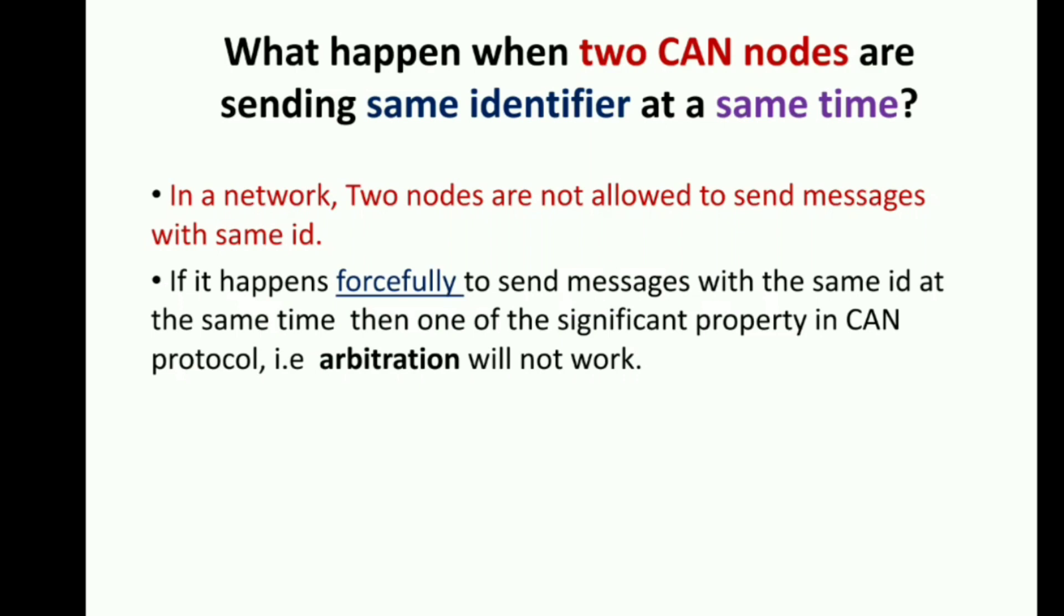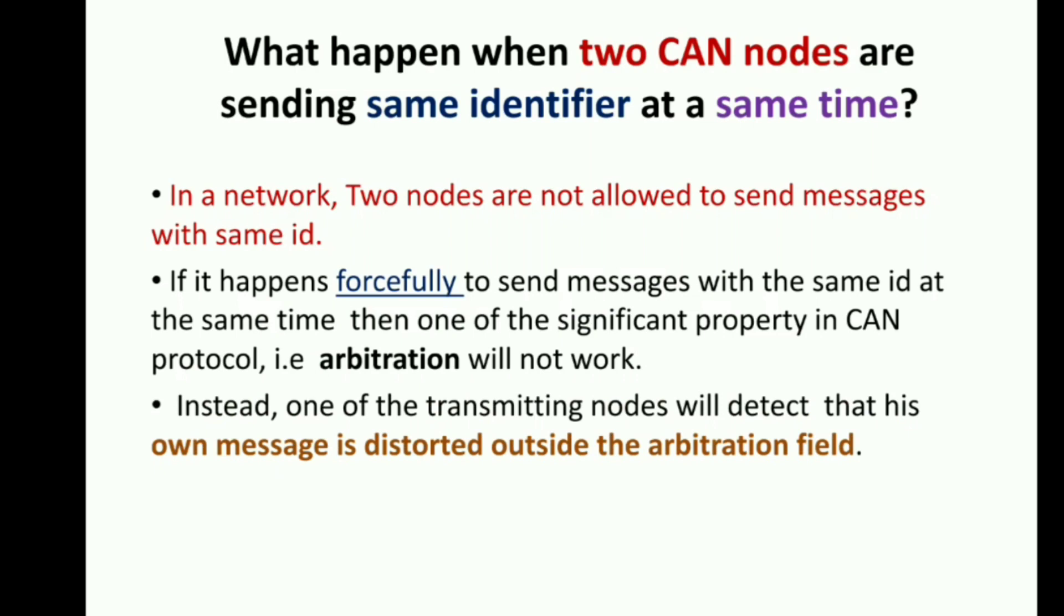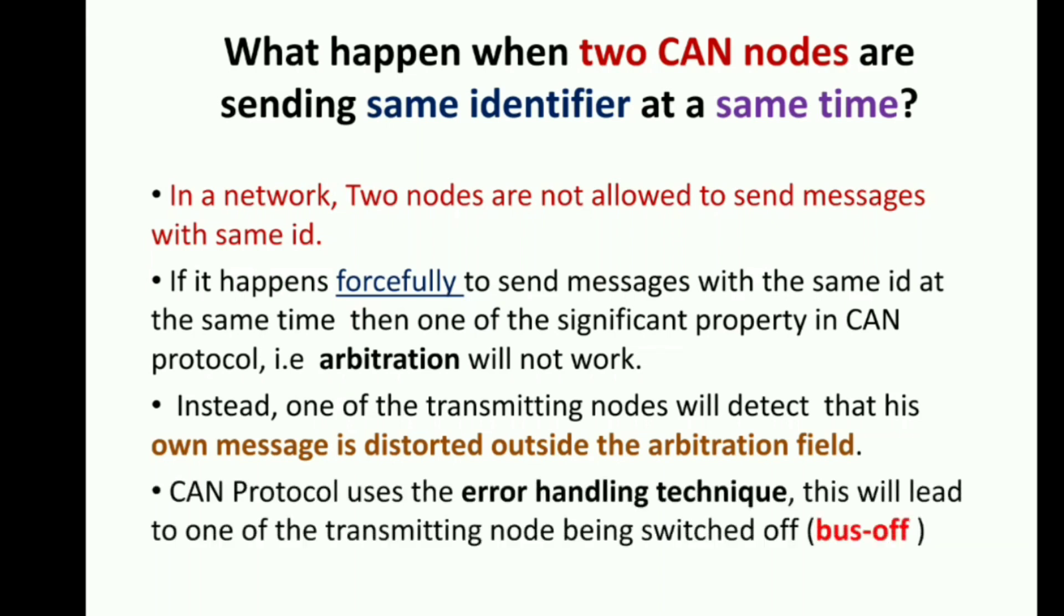Instead, one of the transmitting nodes will detect that its own message is distorted outside the arbitration field. CAN protocol uses the error handling technique. This will lead to one of the transmitting nodes being switched off.